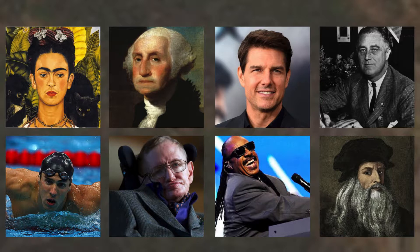Lastly, we have Leonardo da Vinci, the Renaissance man himself. Based on his writings, scholars — including some at UCLA — believe he most likely had dyslexia. His mirror writing was not a code but a more natural way of writing for him, and it explains his deep spatial reasoning, which is a hallmark of dyslexia. All of these individuals had disabilities and were able to achieve greatness. We want students here at UCLA with disabilities to be able to achieve their potential, just as these people did.